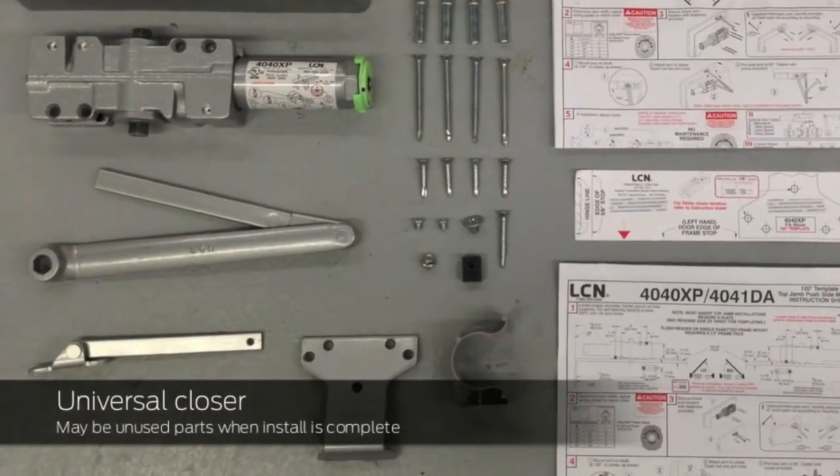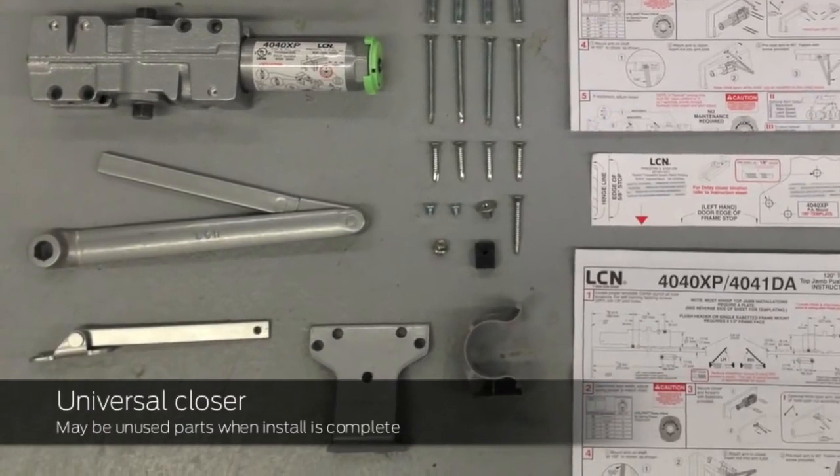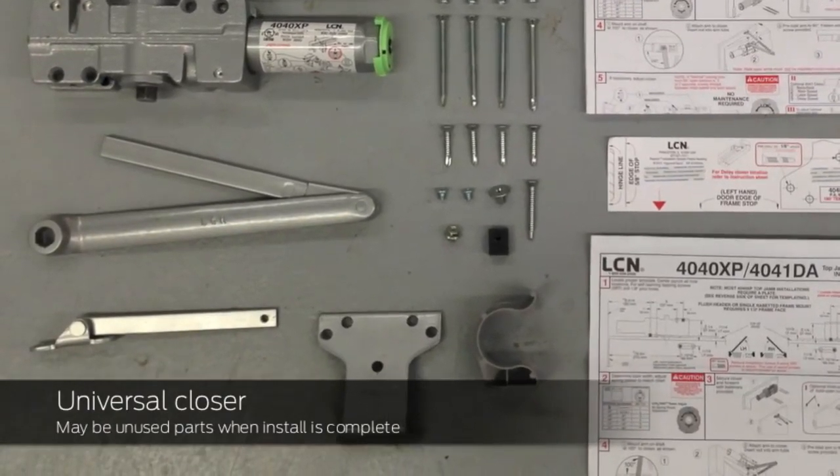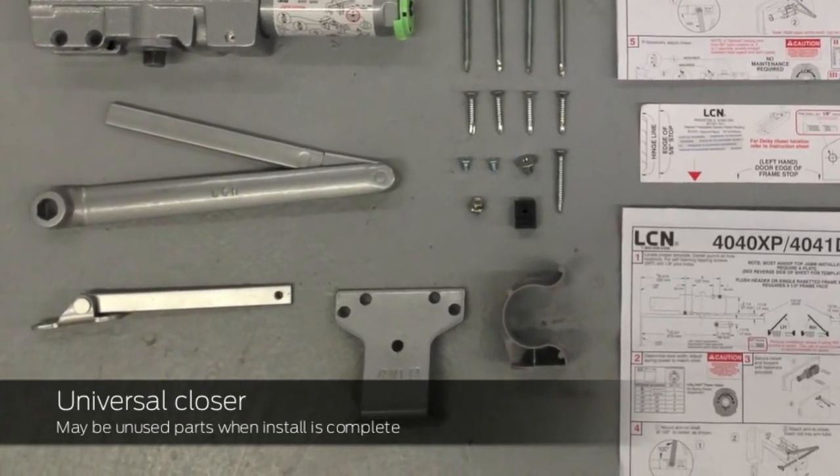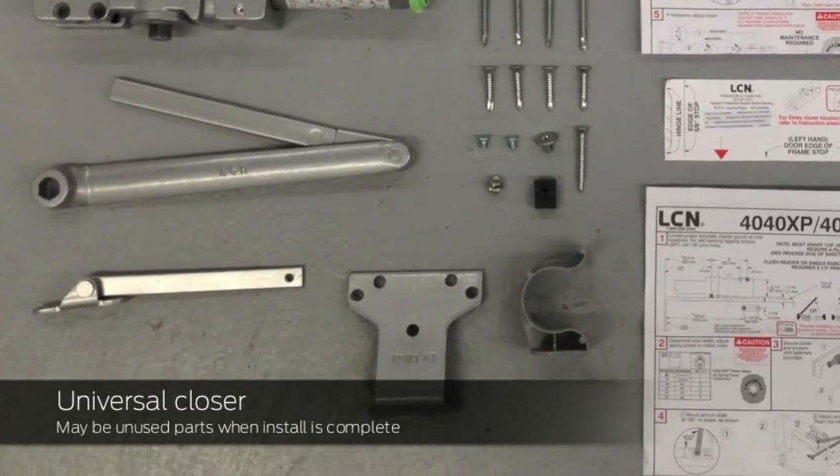The 4040XP is a universal closer that comes with all parts necessary to install as regular arm, parallel arm, or top jam mount. There may be unused parts at the end of the installation.